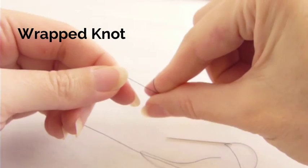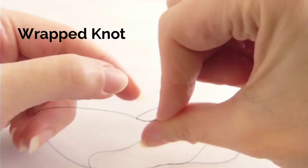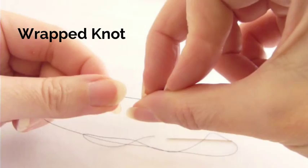Keep that anchored against your thumb, but take a second finger on the same hand, and then pull that knot down to the end of the thread, and that gives you a nice little knot.